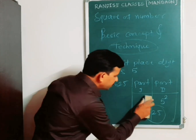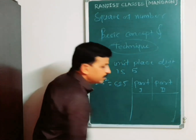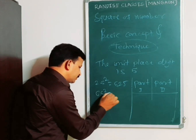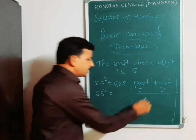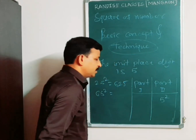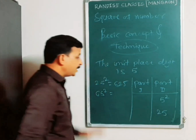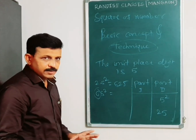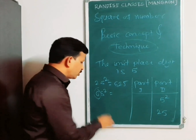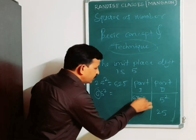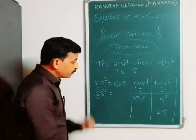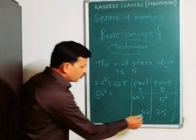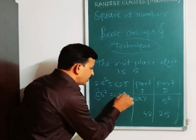Same technique on another example: 165 square. Part 2 is the same — 5 square means 25. For part 1, the tens digit is 6 and the next number is 7. Multiplication of 6 and 7 is 42. Therefore, 42 and 25 gives 27225 — the square of 165.